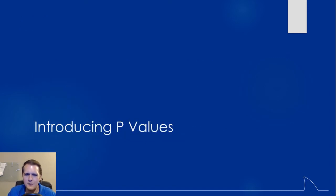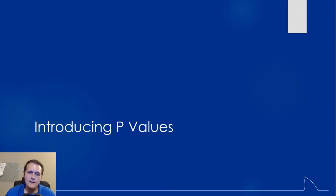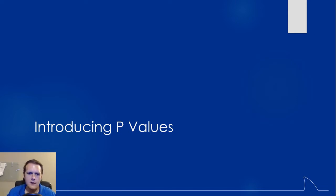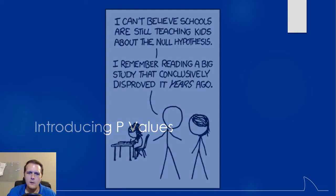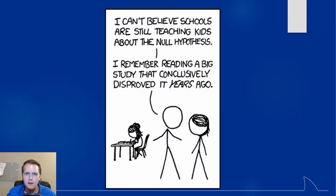I'll start off by introducing a p-value. I'm sure most people have heard of a p-value before — in research or articles you've read, it said the p was less than 0.001, or the p was less than 0.05. Whatever the case may be, what the heck is a p?